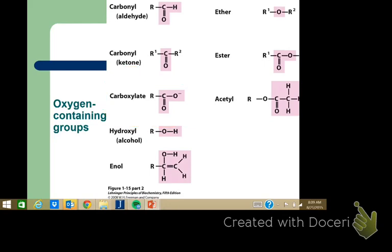Hydroxyl is an alcohol group — those two terms are used interchangeably. Enol is a special type of alcohol; it's the tautomer of the ketone from organic chemistry. It's an alkene with an alcohol hanging off of it, which is why it's called enol.